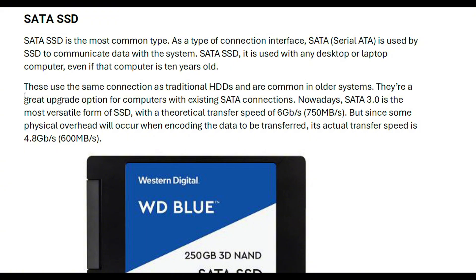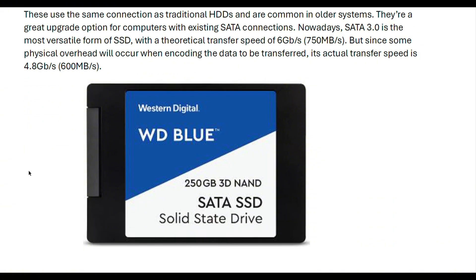These use the same connector connections as traditional HDDs and are commonly found in older computers, making them a great upgrade option for computers with existing SATA connections. Nowadays SATA 3.0 is the most versatile form of SSD, with a theoretical transfer speed of 6 Gbps. However, due to physical overhead, the actual data transfer speed is 4.8 Gbps or 600 MBps. This is a typical SATA SSD drive.